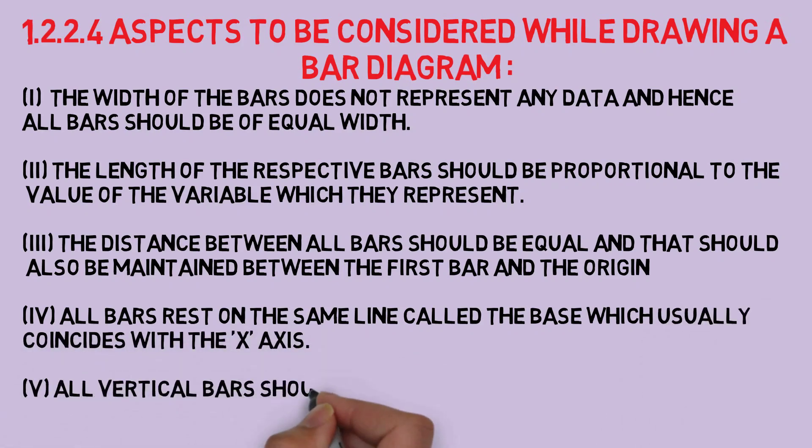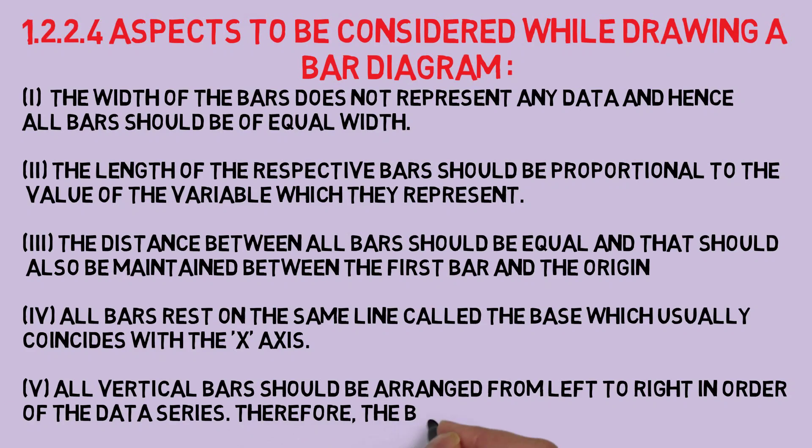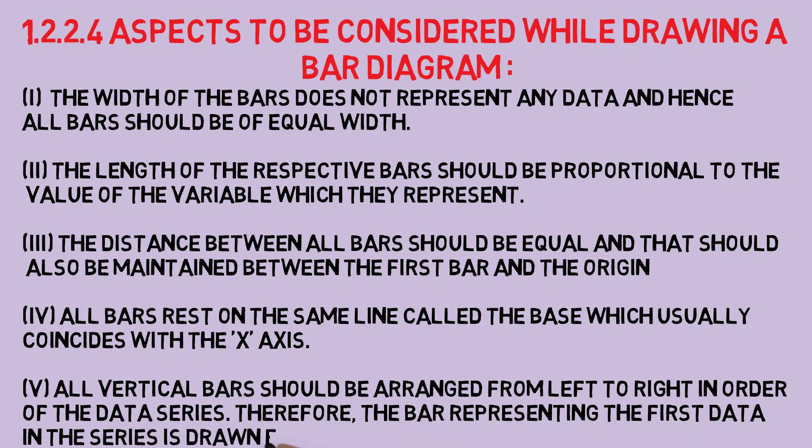Number five: all vertical bars should be arranged from left to right in order of the data series. Therefore, the bar representing the first data in the series is drawn first near the point of the origin.